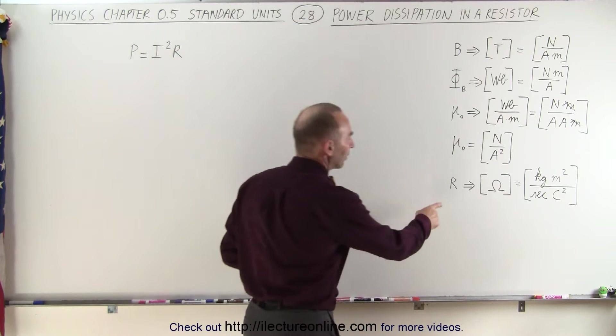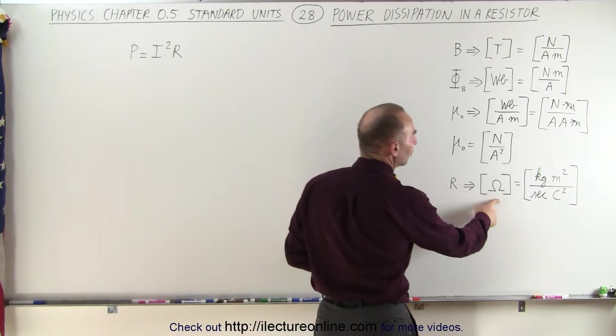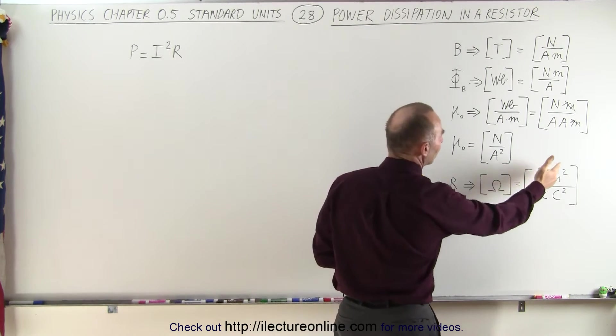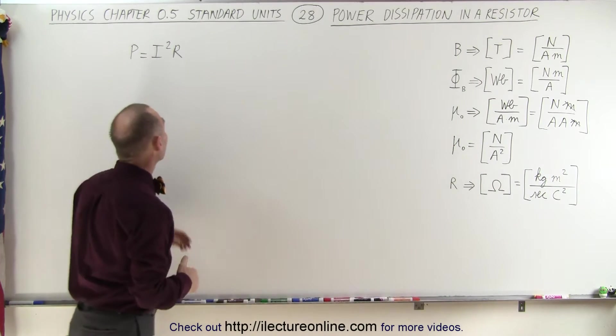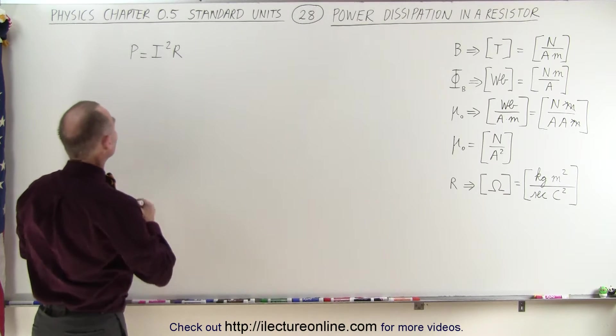We already have worked out the units for resistance, ohms, which in the previous video we showed that it's equal to kilograms meters squared per second times coulomb squared.